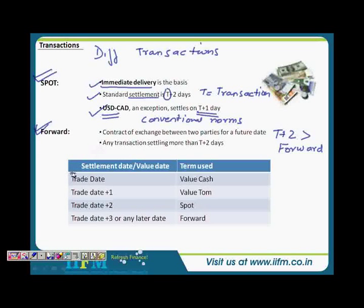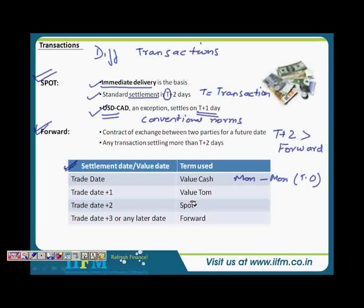These terms refer to settlement dates. If you want your account credited today — on the same day as the transaction — it is called a value cash transaction. For example, if you convert rupees to dollars at a bank and receive the dollars in hand on that day, that is a cash transaction settled on the trade date.